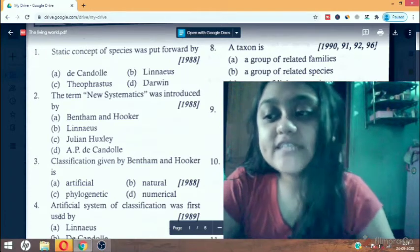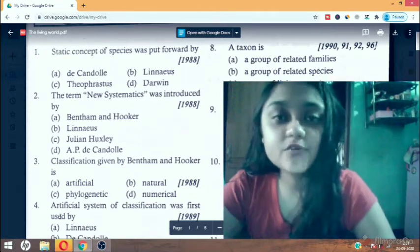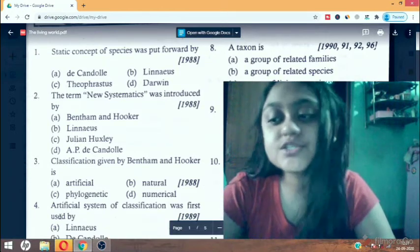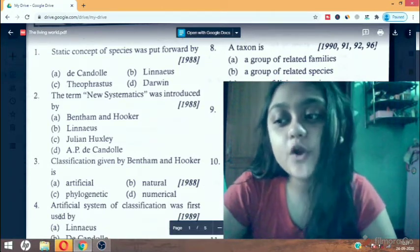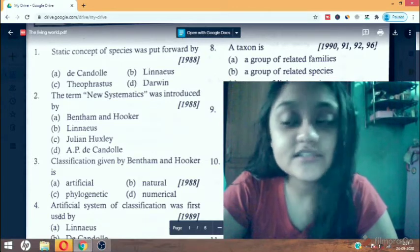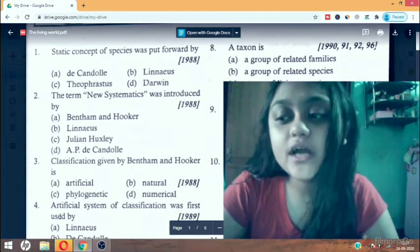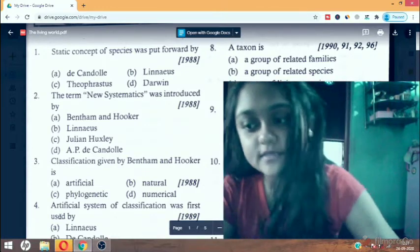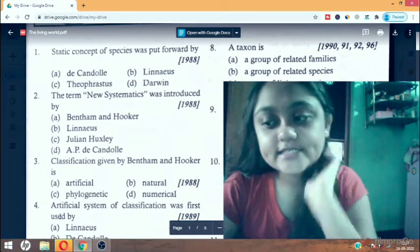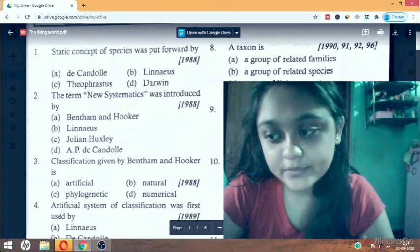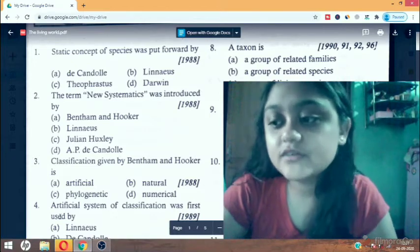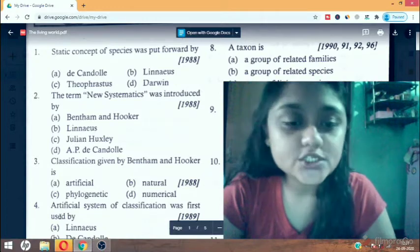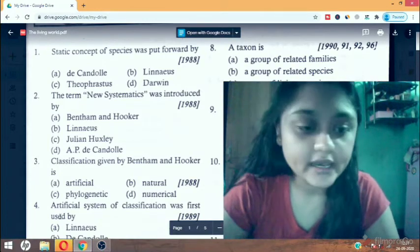George Bentham and Joseph Dalton Hooker has given natural system of classification. In this system, all the important characteristics of the organism that provide information regarding their natural relationship are taken into consideration, which helps in bringing out maximum number of similarities in a group and comparable differences with other groups of organism.